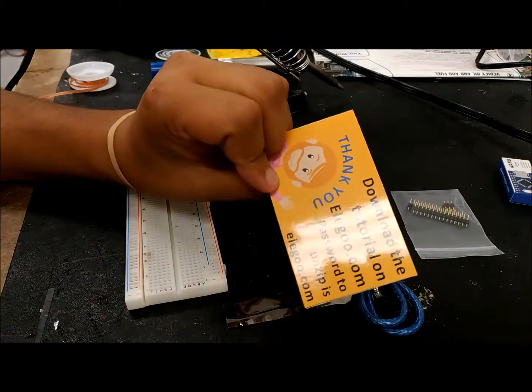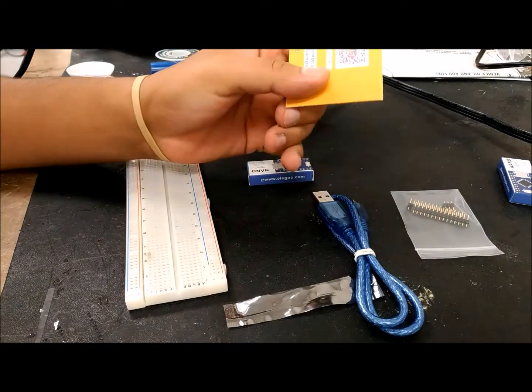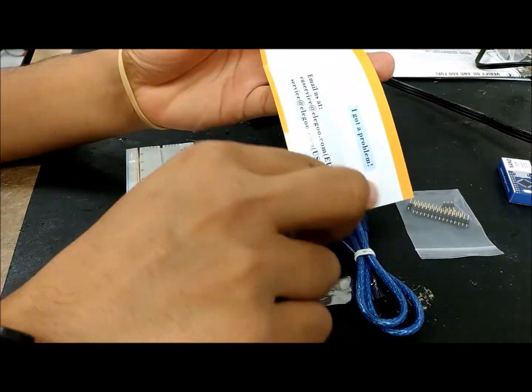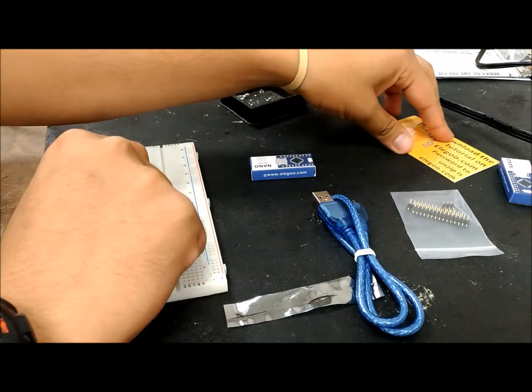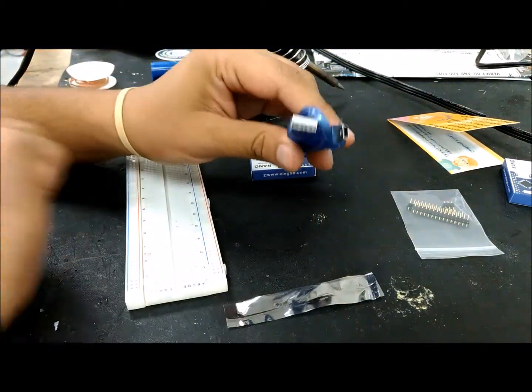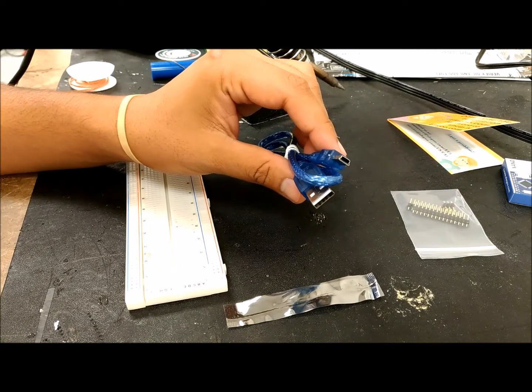Just a card telling you to go download the tutorials if you need any help or support, things like that on their site. Also I have the - I believe this one is the Mini B cable, if I'm not mistaken.